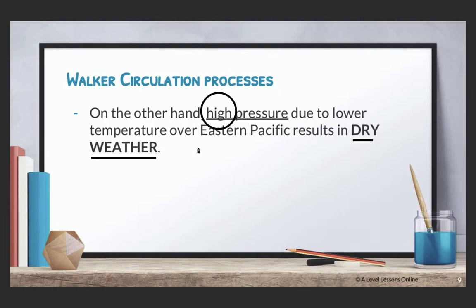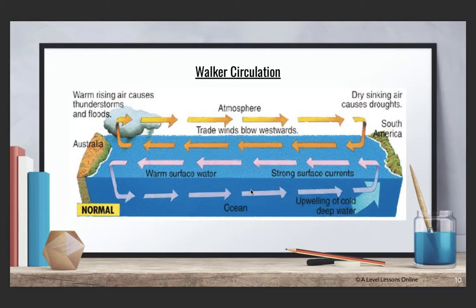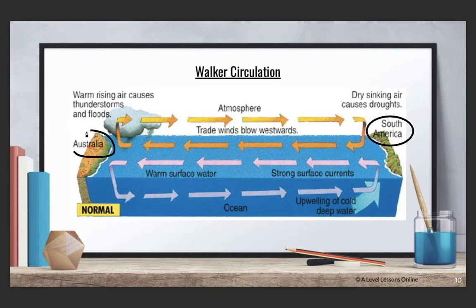So if you look at the Walker Circulation in actual diagram form, like we had mentioned, the trade winds actually blow towards the west — from the east, which is South America, towards the west, which is Australia. The warm surface water will actually pile up on the western side, while the cold deep ocean water will actually move towards the surface of the eastern Pacific. As a result, there will be dry sinking air on the eastern Pacific, which causes droughts, and for Australia there will be thunderstorms and floods. This is why places like Chile and Peru actually constantly have droughts as a result of the Walker Circulation.